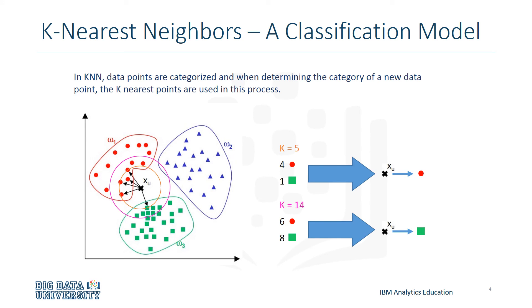Suppose we change the value of k to a larger number, such as k equals 14, for example. We can see here that there are six red points and eight green points. Therefore, x-u would be classified as a green point.